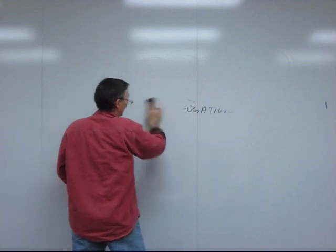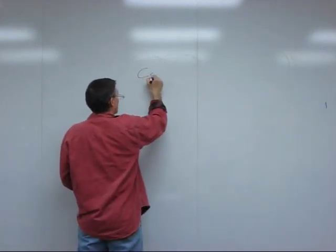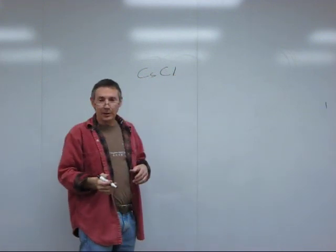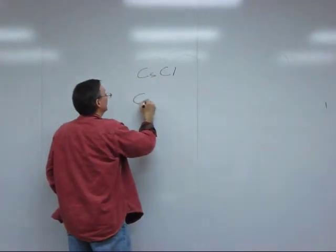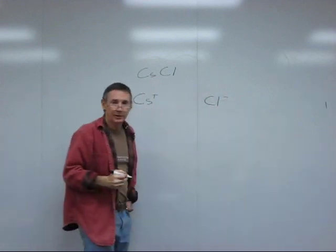Cesium chloride is a salt. This means when you put it in water, the ions that compose this salt are going to dissociate in water. So you get cesium positive ions and chloride negative ions.